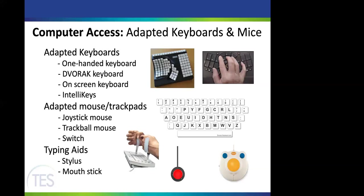On-screen keyboards are accessible on pretty much every computer through the accessibility menu — a keyboard pops up on screen and you click each letter using your mouse. It's not the quickest, but for someone who can only use a mouse it's a great option. IntelliKeys is a more advanced separate keyboard system with a membrane pad and interchangeable overlay mats — you can customize the number of keys, colors, sizes, and even put whole words on the keys instead of individual letters.